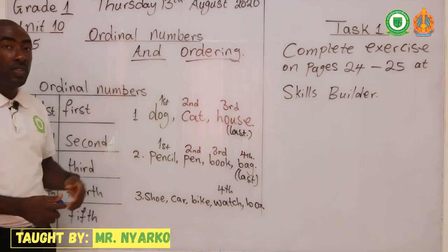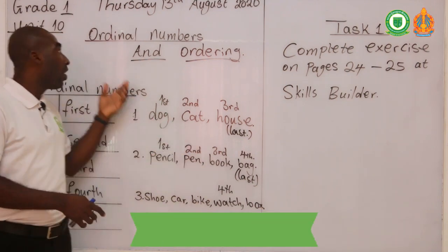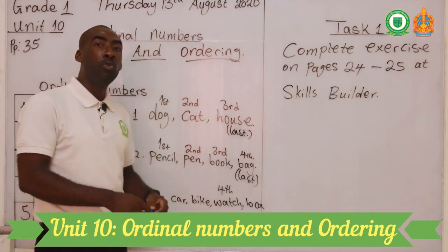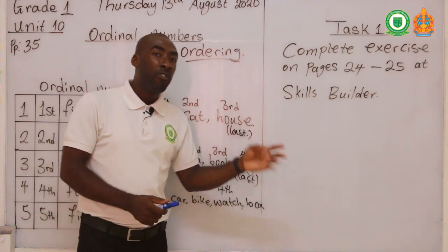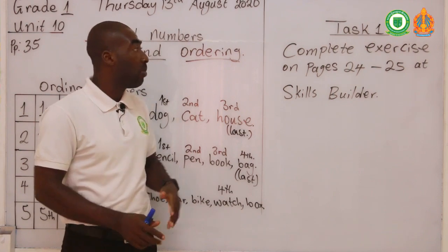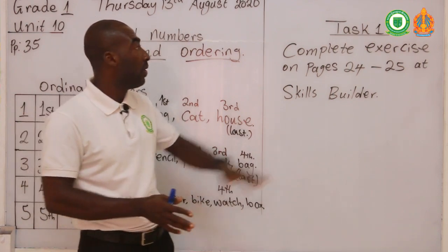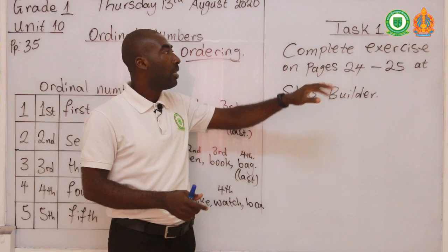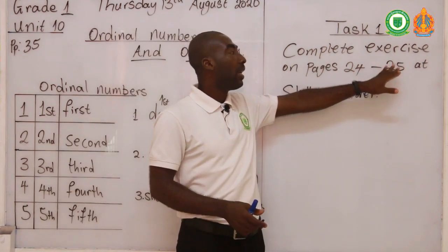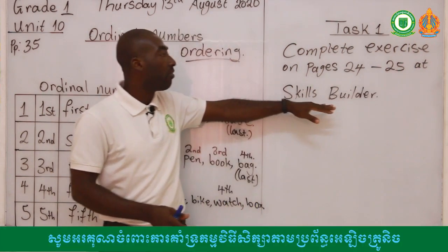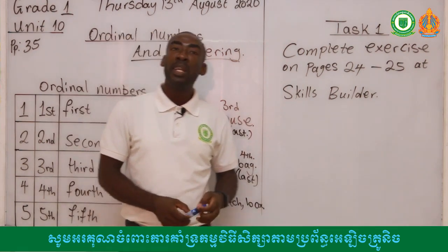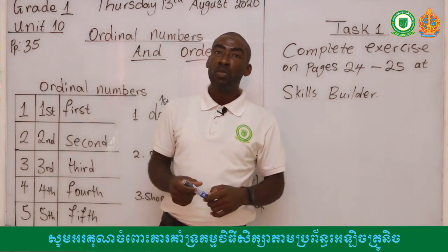On this video we are looking at the first five ordinal numbers. In the second video we'll look at the other five ordinal numbers, making ten in total. Before we go to the second video, you have to do this task. You are supposed to complete your exercise on pages 24 and 25. You can find this at the skills builder section. Do this work, submit to me, let me check, and then we can go to video two.